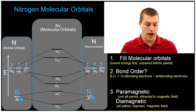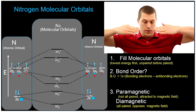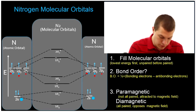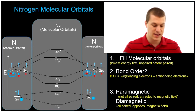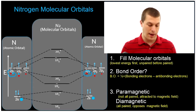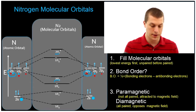One of my p orbitals is laying down. In this case, where I've drawn them, you see that the px is laying down. And that means as they approach each other, they directly overlap, and so they actually result in a sigma bond and a sigma antibond.